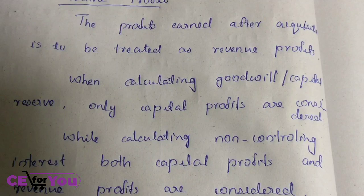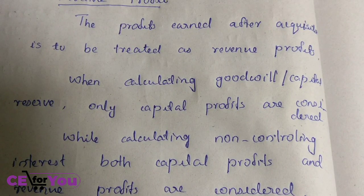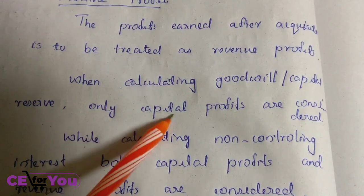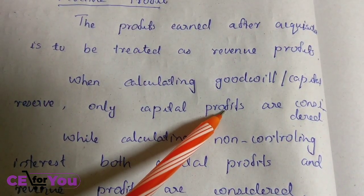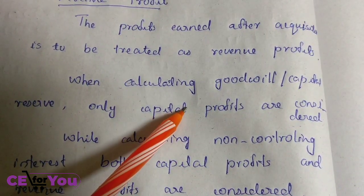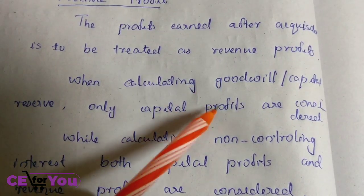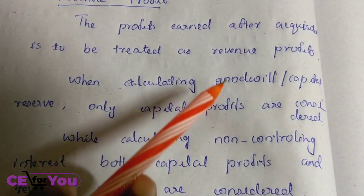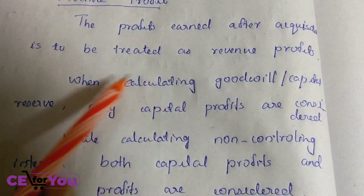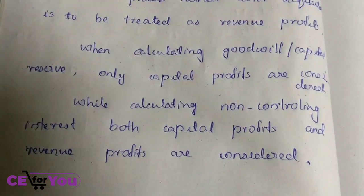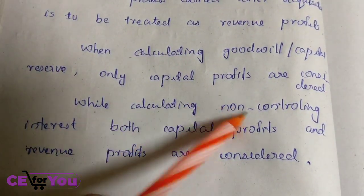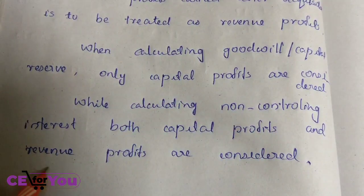If we calculate the capital profits, we calculate the goodwill. In the beginning, the revenue profit is not considered — only capital profits are used. When calculating goodwill and non-controlling interest, both capital profits and revenue profits are considered.